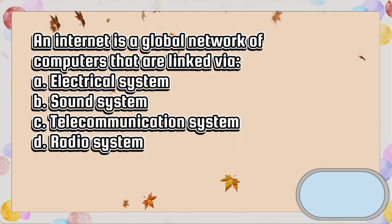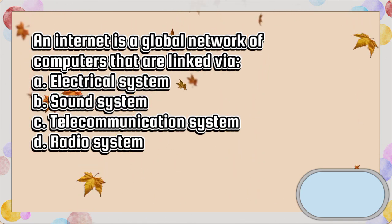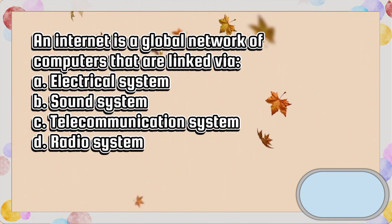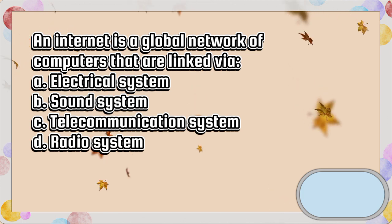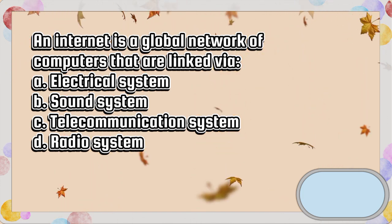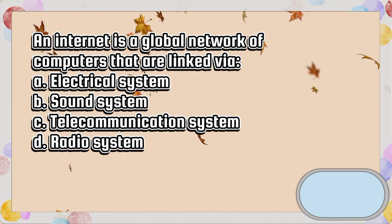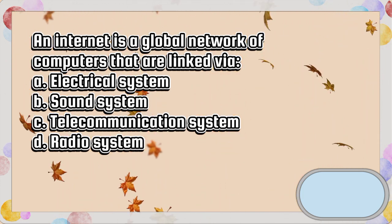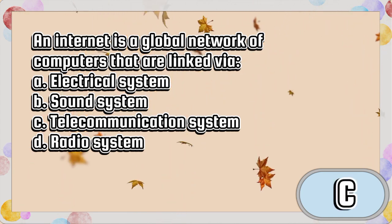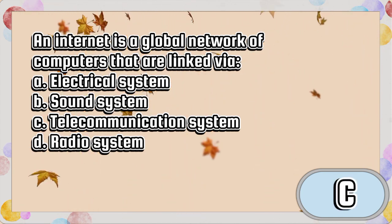An internet is a global network of computers that are linked via. A. Electrical system. B. Sound system. C. Telecommunication system. D. Radio system. The answer is letter C.